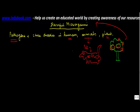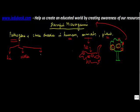These pathogens can be transferred to human beings by means of air, water, or food, and can also be transmitted by animals. Let's take an example for each one of them.